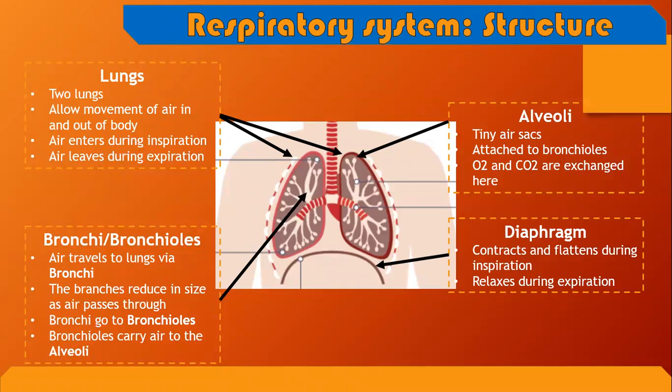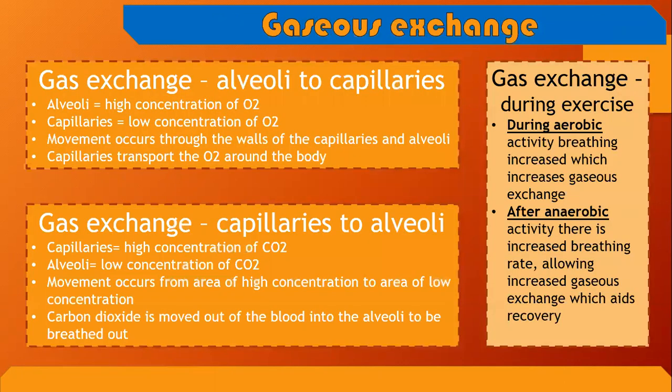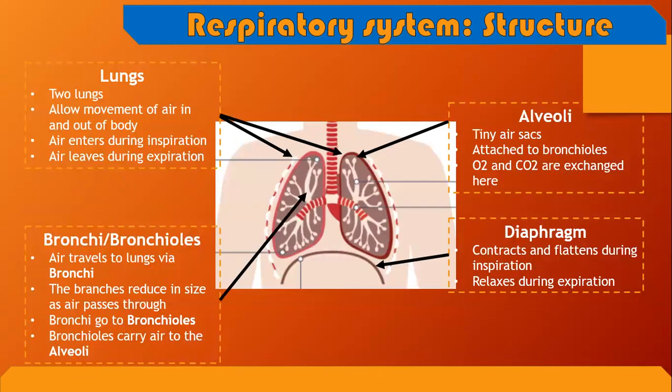From the lungs, we've got the bronchi or the bronchioles. These are the big strands that you can see on the diagram. As air travels through the bronchi, the passages get smaller and the bronchi divides. The smaller airways towards the end are the bronchioles.